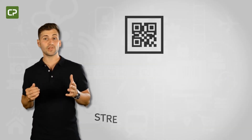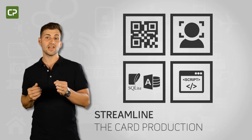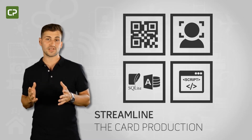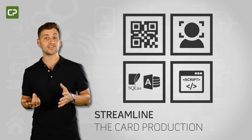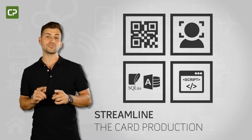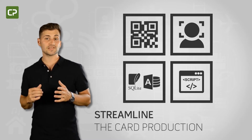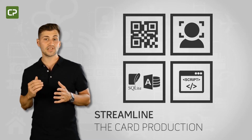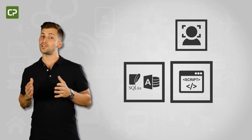XM Edition streamlines and responds to your photo ID printing needs by automating the photo editing process, connecting directly to your MS Access and SQLite database, and allowing you to personalize the card printing workflow to your needs through script. These features translate into fewer mistakes, greater efficiency, better service and security, and a lot of time saved.